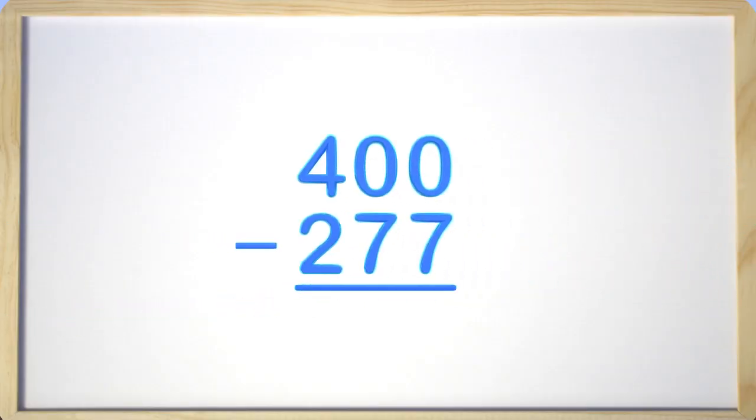I'm having trouble with subtracting when there are zeros in the top number. Here we have the number 400 subtract 277. I know how to regroup and at first this looks scary, but once you understand how it works, it's a lot easier.